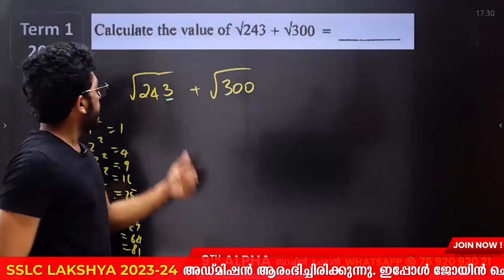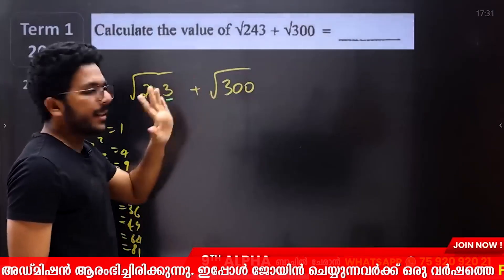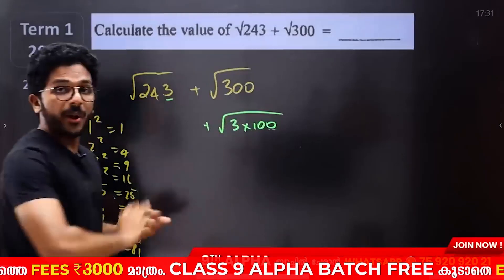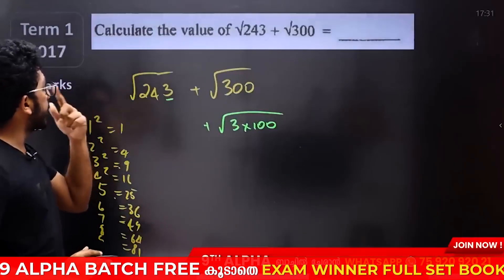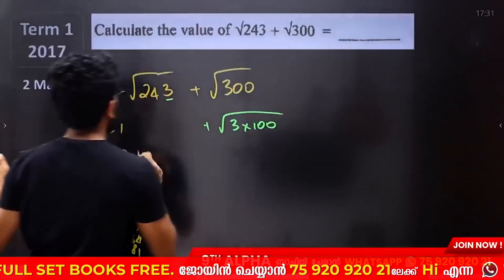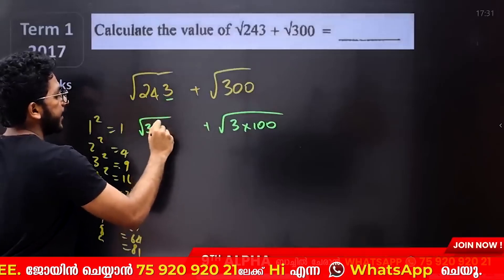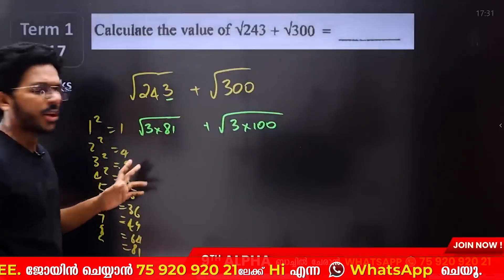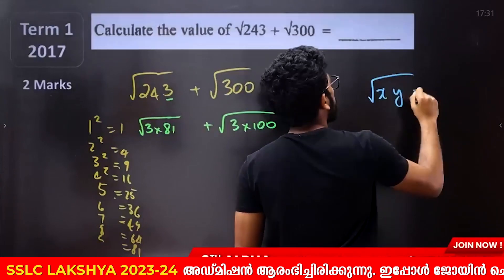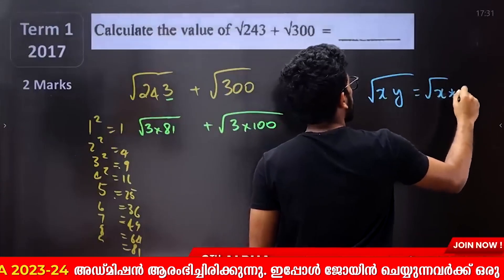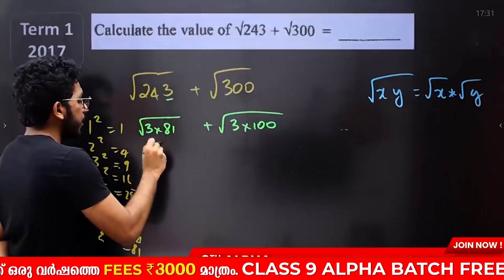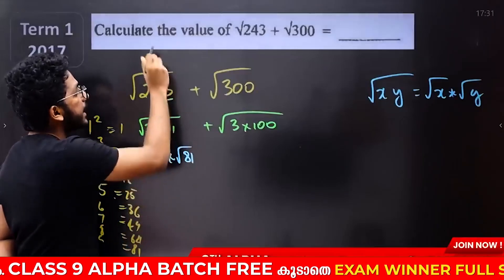There is root 300 and root 243. If you factor 300, you write 3 into 100. If you factor 243, you write 81 into 3. Then you will get 3 into 81 equals 243. This is the rule: root xy equals root x into root y. Multiplication is separate.